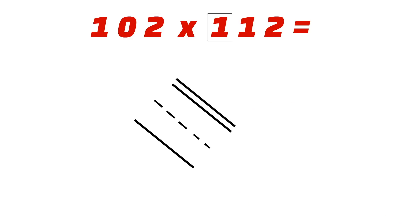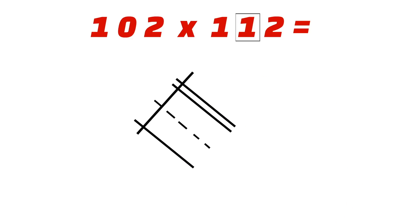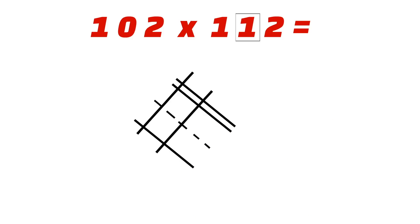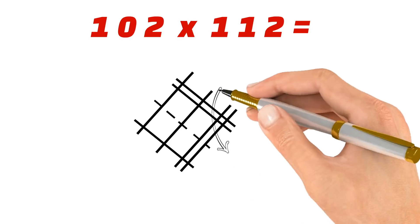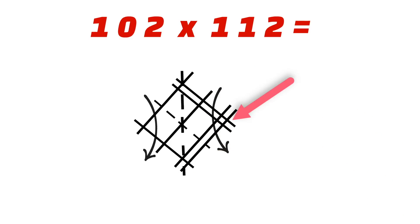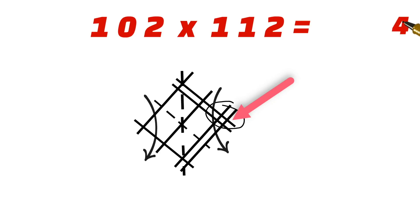For the next number 112, the first digit is 1, so we draw one line. The next digit is 1, so we draw one line after leaving some space. The last digit is 2, so after leaving some space, we draw two lines. Now let's find the number of intersection points in group 1. There are four intersection points, so the units place will be 4.